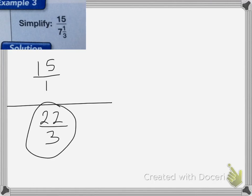I need to make the denominator equal to 1, so I'm going to multiply it by the reciprocal, 3 over 22. Whatever you do to the denominator, you have to do to the numerator. So multiply the numerator by 3 over 22.